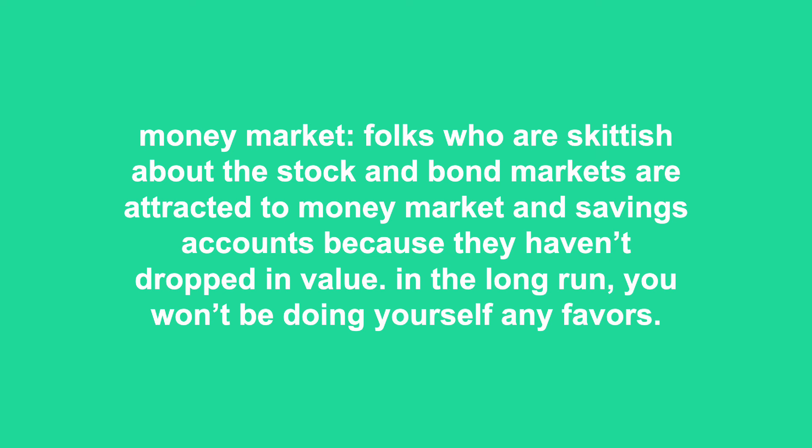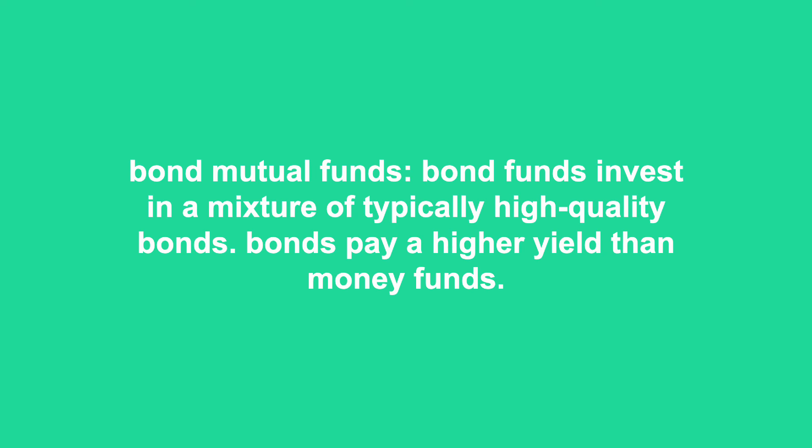Typical investment options for 401k plans in order of increasing risk: Money market — folks who are skittish about the stock and bond markets are attracted to money market and savings accounts because they haven't dropped in value, but in the long run you won't be doing yourself any favors. Trying to time your investments to catch the lows and avoid the peaks is impossible. Bond mutual funds invest in a mixture of typically high-quality bonds and pay a higher yield than money funds. The bond fund's current yield is probably a percent or two higher than the money market fund's yield. Bond funds carry higher yields but also greater risk because their value can fall if interest rates increase. However, bonds tend to be more stable in value over the shorter term than stocks. Aggressive, younger investors should keep a minimum amount of money in bond funds.